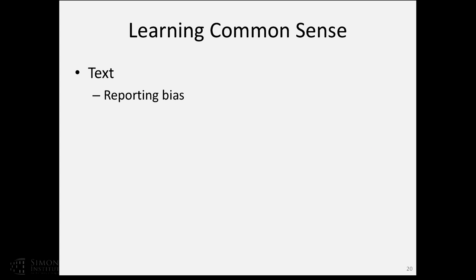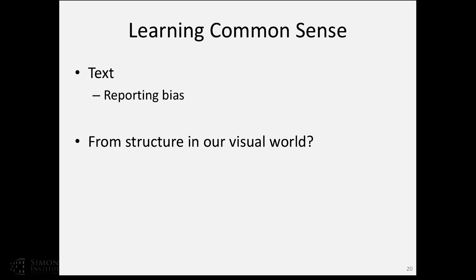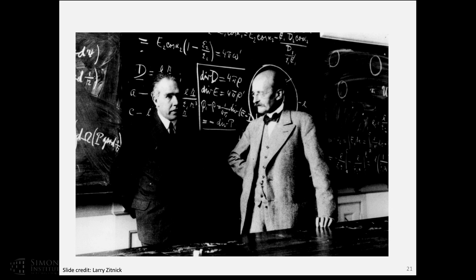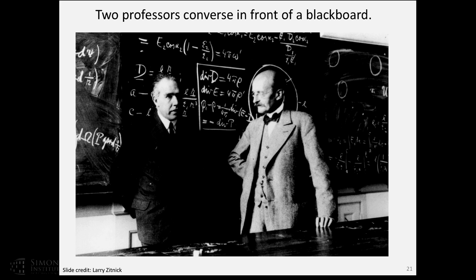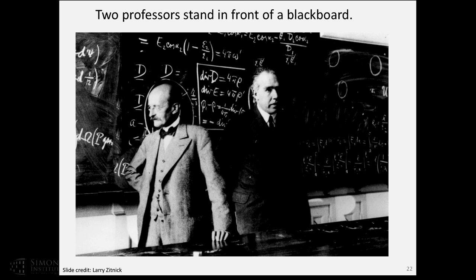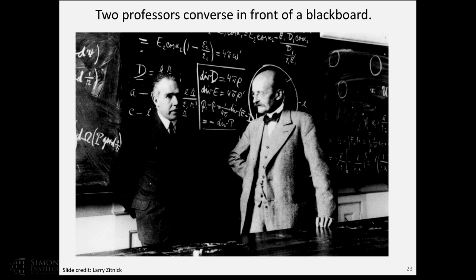Coming from a computer vision background, the thought was: instead of relying on text explicitly written by humans to communicate with other humans, is there a way to just watch the world around us — use visual data that tells us what's going on — and leverage that structure to learn common sense knowledge? There is a lot of structure in the visual world. For instance, the gaze of two people relative to each other differentiates whether they are talking versus just standing around — that is rich structure we could learn from the visual world.